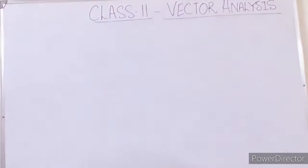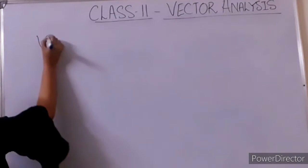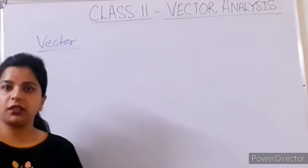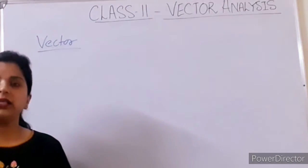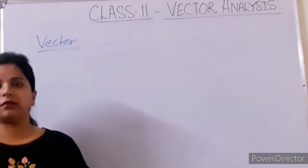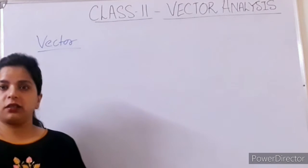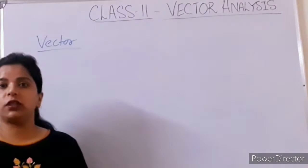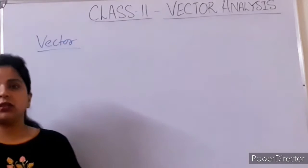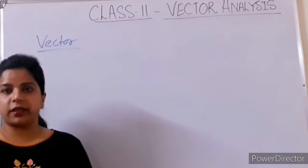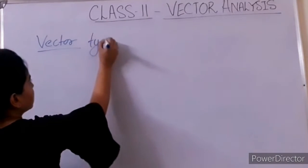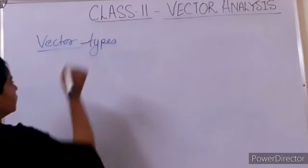Now let us start with the vector. A vector is a physical quantity that has both direction and magnitude — that is called a vector quantity. I will concentrate on vector analysis only. The types of vector quantities we will now study.